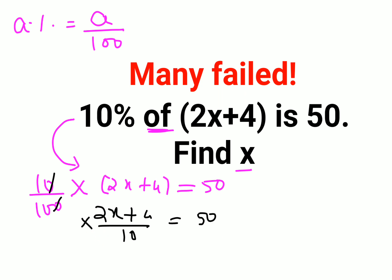In order to find the value of x, you will multiply both sides by 10. So this is cancelling. So now we have 2x plus 4 equals to 500.